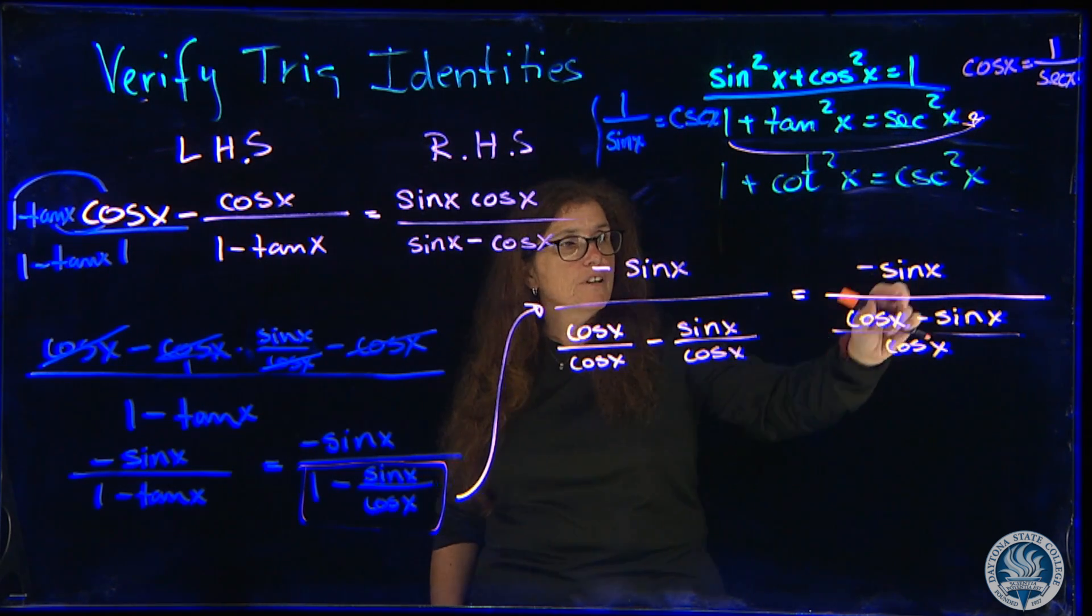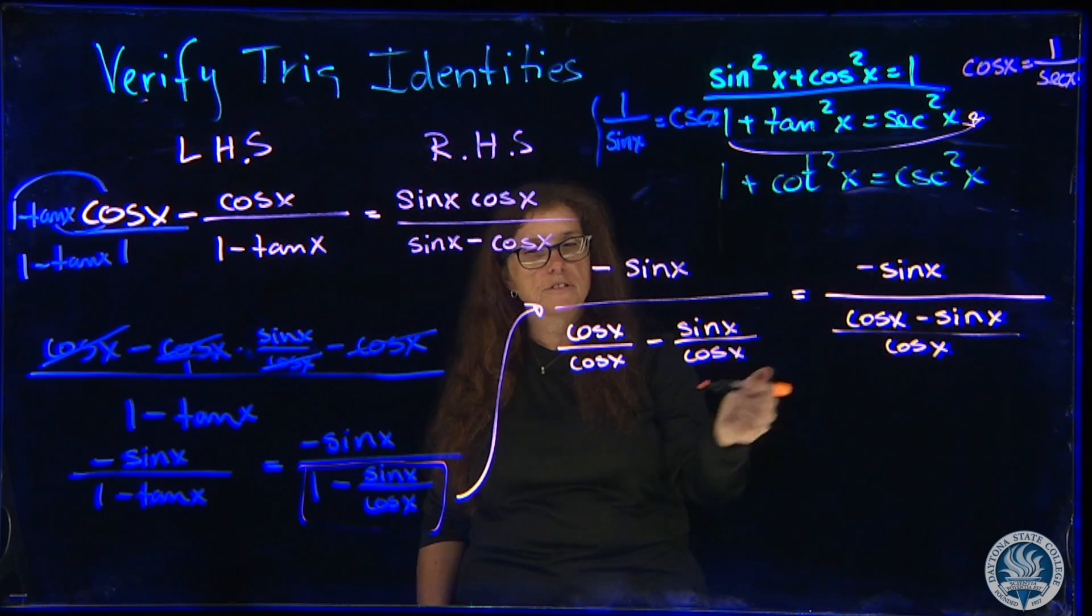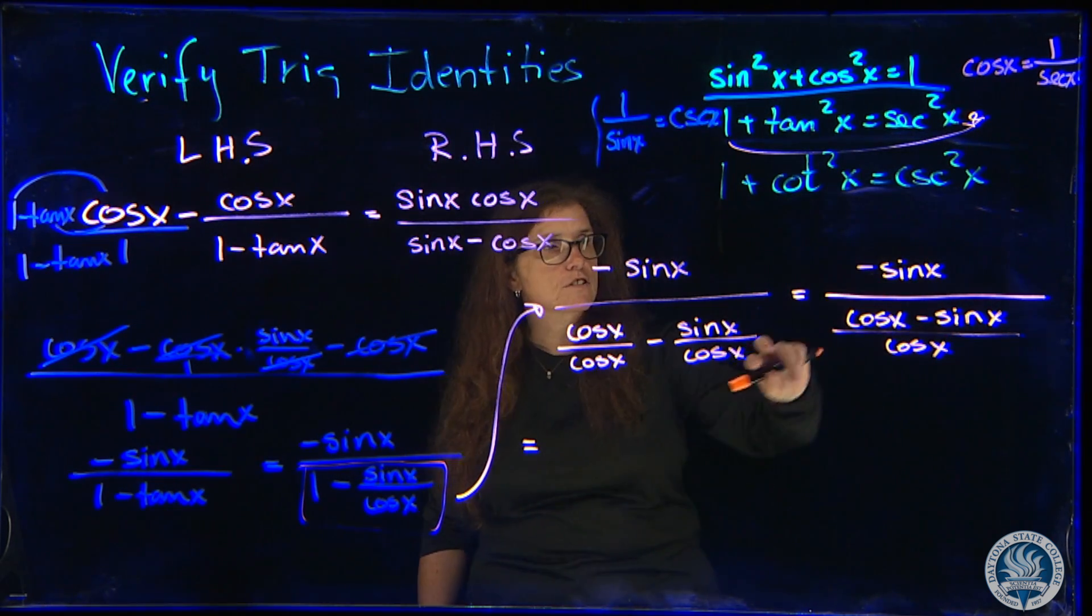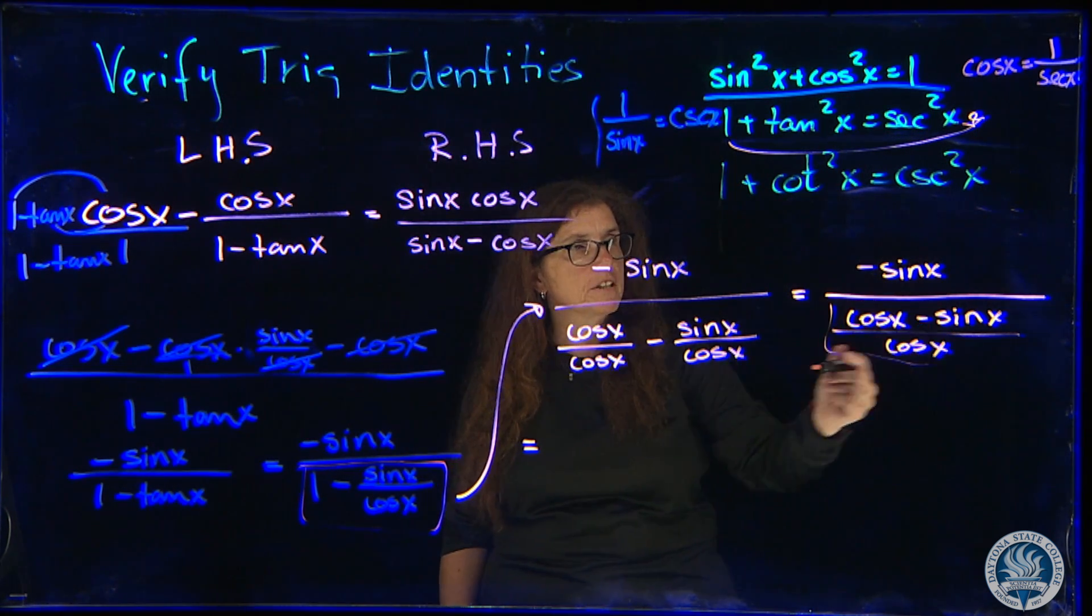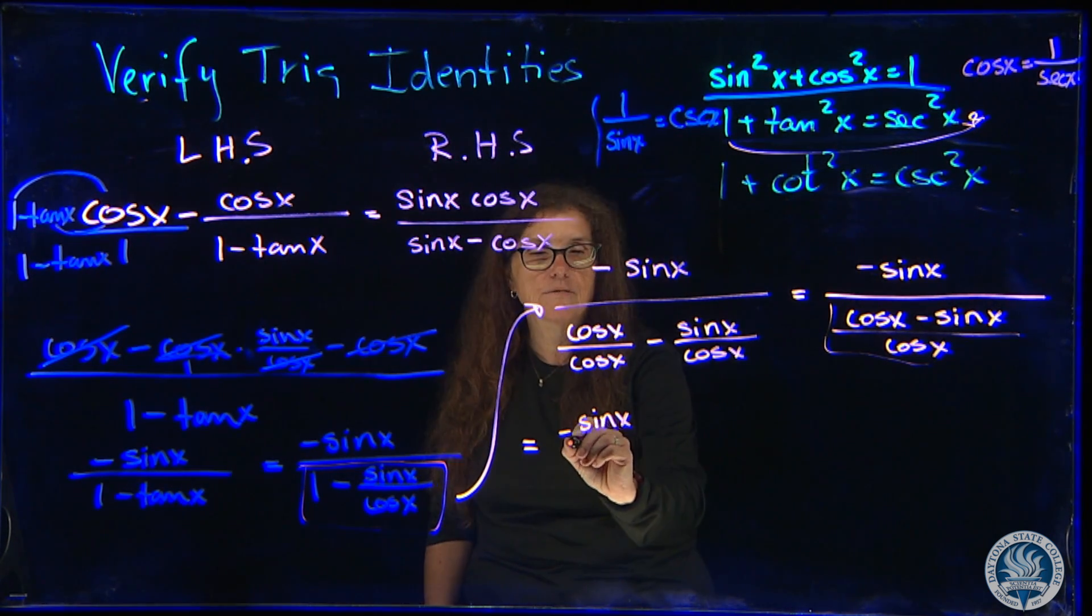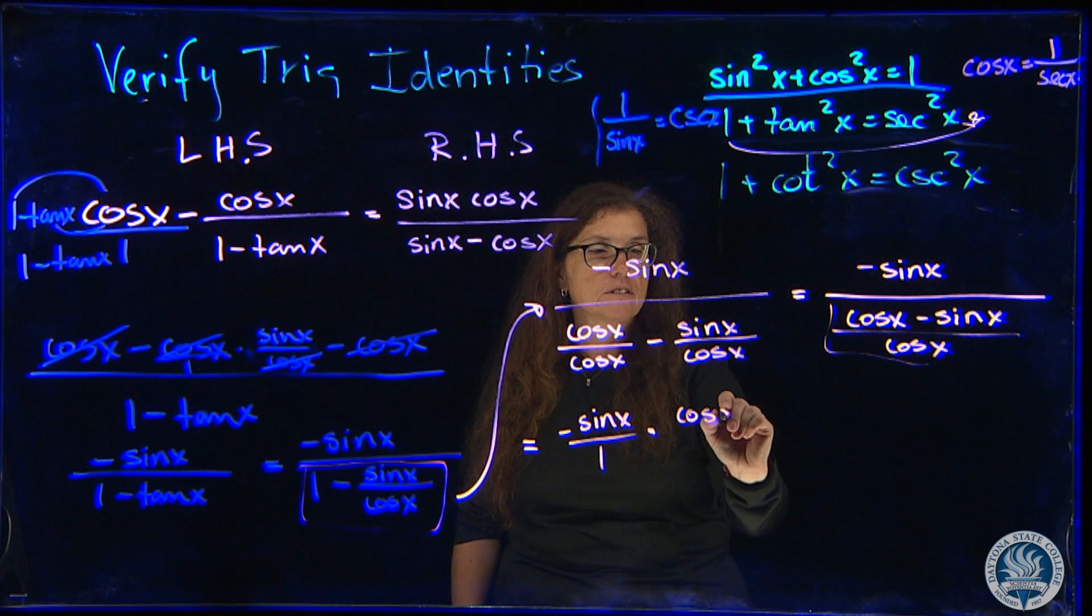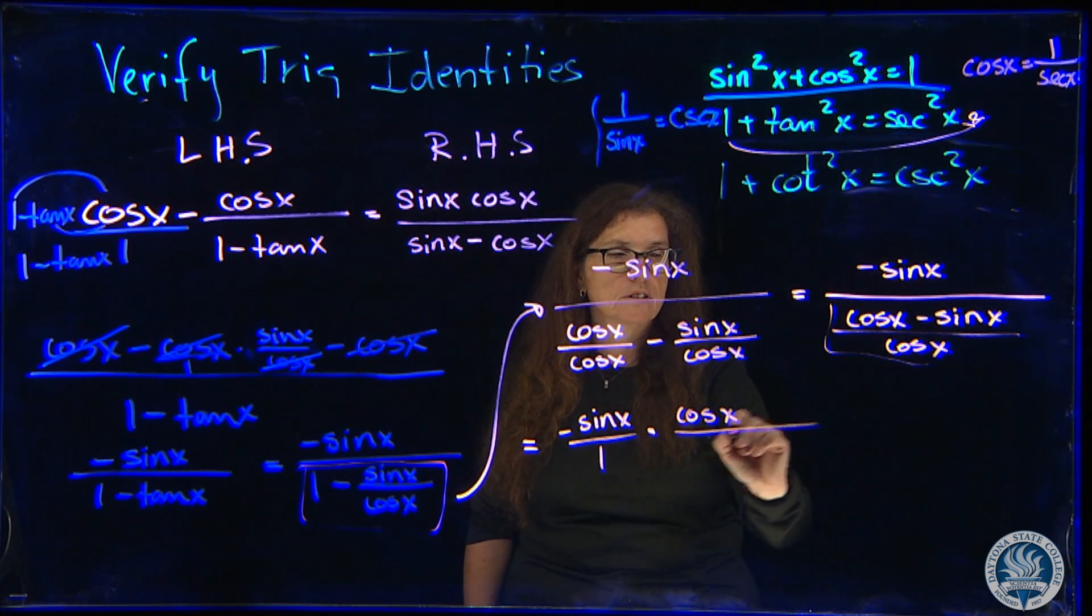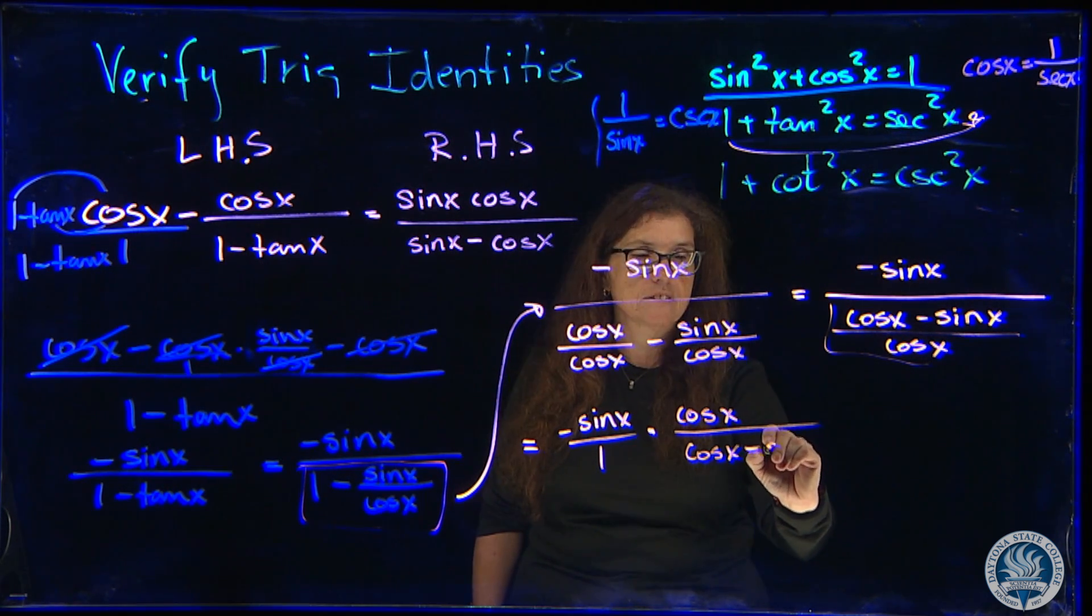This is a complex fraction. How do we simplify complex fractions? By multiplying by the reciprocal of the denominator. Minus sine of x over 1 times cosine of x over cosine x minus sine x.